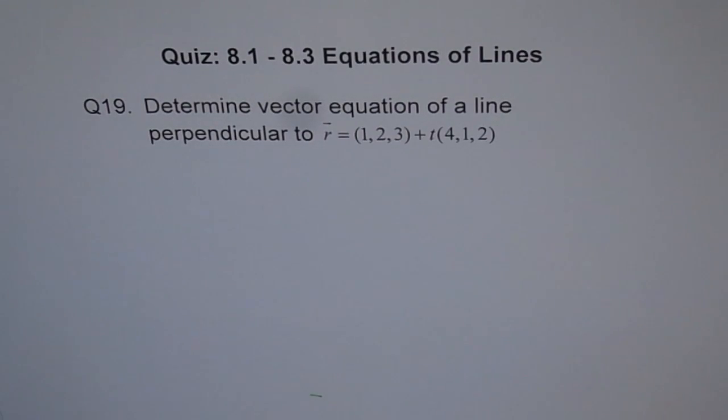Question 19. Determine vector equation of a line perpendicular to the line R equals (1, 2, 3) plus T times (4, 1, 2).